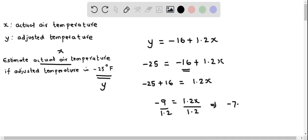This is negative 7.5 equals X, in degree Fahrenheit. Therefore, the actual air temperature is negative 7.5 degree Fahrenheit.